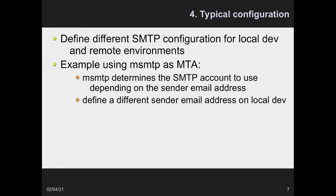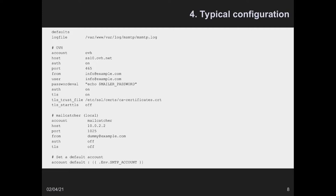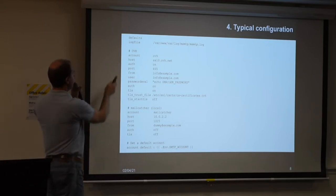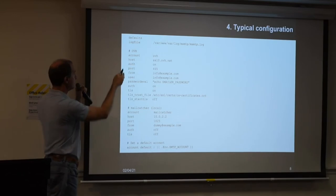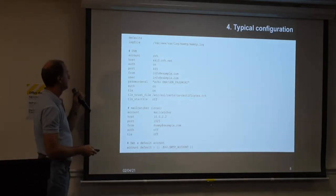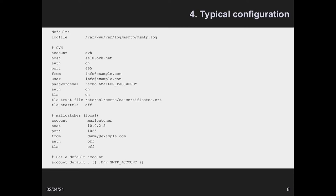You configure MSMTP to use the SMTP account applicable to your environment — it's simply a matter of defining a different sender email address per environment. This is an MSMTP configuration file where you define what MSMTP calls accounts. Here I have two accounts: the production account, which happens to be OVH, a popular mail hosting company, with the real-life from address, for example info@example.com.